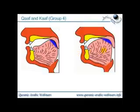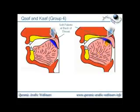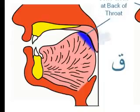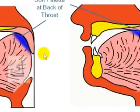Group four is where the tongue becomes involved. Two letters are pronounced where the back of the tongue touches the soft palate — the very back of the top of your mouth. These are Qaf and Kaf. When you say Qaf, the back of your tongue touches the very back of the soft palate and blocks the air before you release the sound — Qaf.